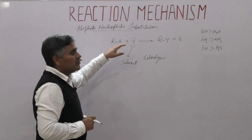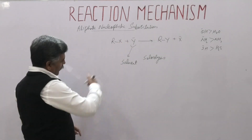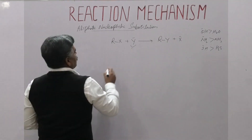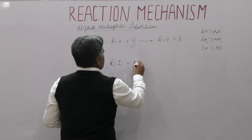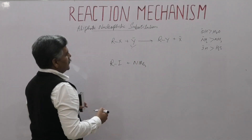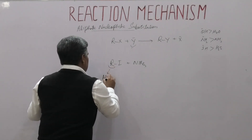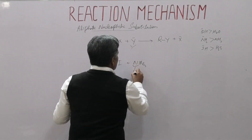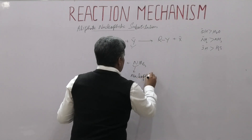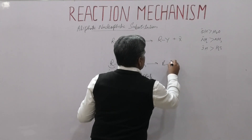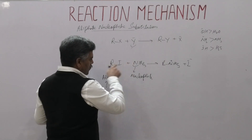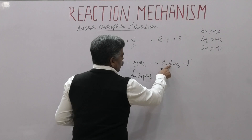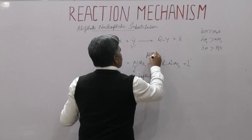So solvolysis is cleavage of the R–X bond in the presence of solvent. In aliphatic nucleophilic substitution, when Y acts as both the nucleophile and the solvent, the reaction is called solvolysis. Now for alkylation of nucleophiles: R–I plus NMe₃ — if R is any alkyl group (methyl, ethyl, propyl, etc.) reacting with the nucleophile, it gives R–NMe₃⁺ plus I⁻. This is alkylation of the nucleophile because the alkyl group is attached to the nucleophilic nitrogen.